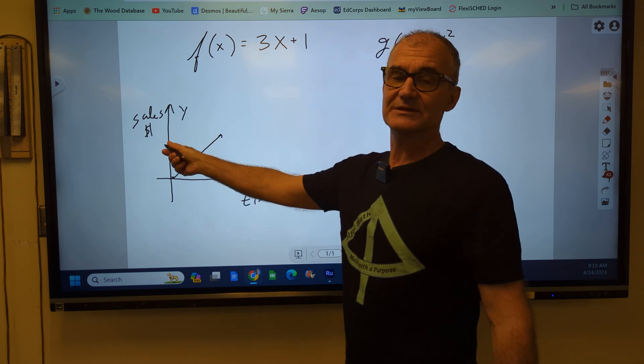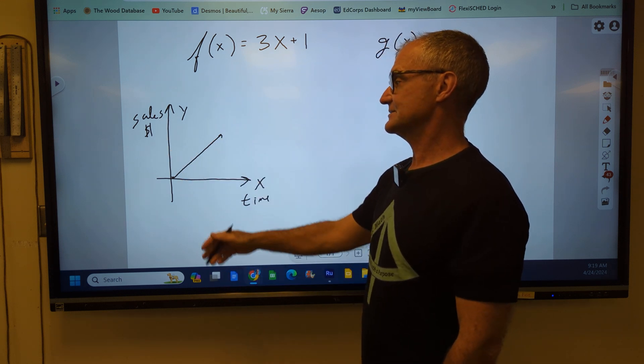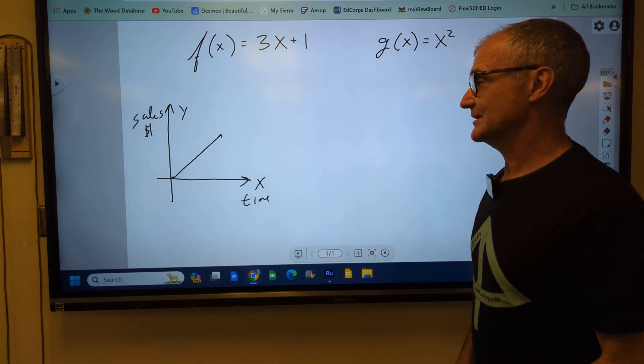Over five years you have that many sales. If it's a straight function like that, it's a linear function.